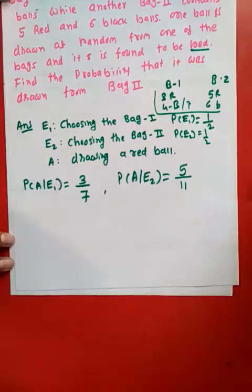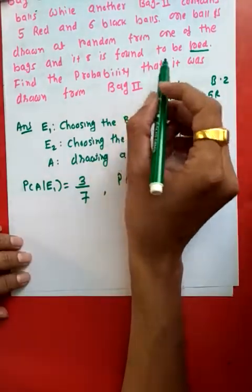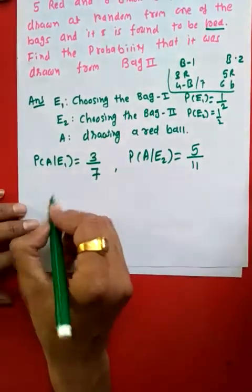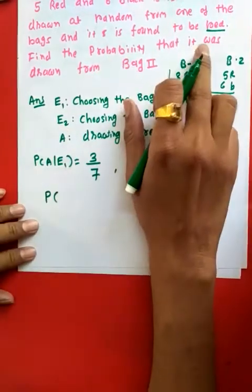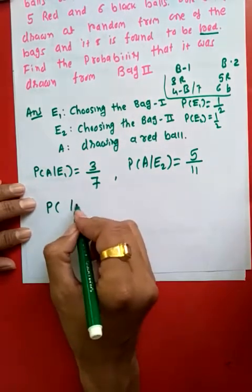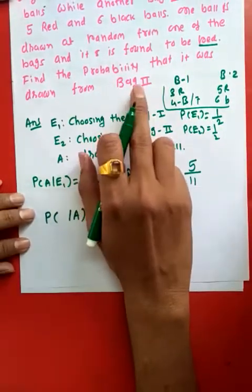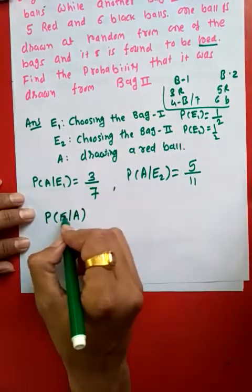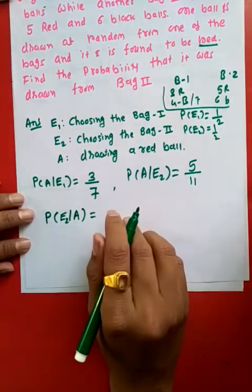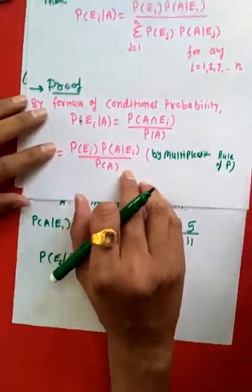Now let us find the probability that the ball was drawn from bag 2, given that a red ball was drawn. A red ball is already drawn — that event has occurred, so it goes after the 'given' sign. We need P(E2 | A). We apply Bayes' theorem to calculate this.